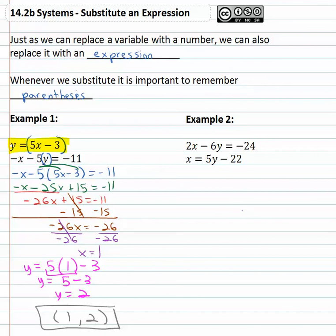Let's try another example. In example 2, we're looking for either a y equals or an x equals, and what we find is the second equation is x = 5y - 22. Well that's really nice because now when I see an x in the other equation, it can be replaced with 5y - 22. So instead of saying 2x, we'll say 2(5y - 22) - 6y = -24.